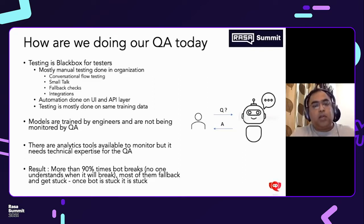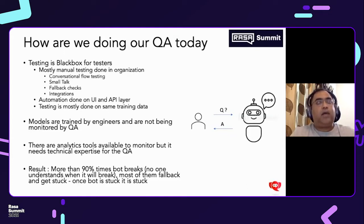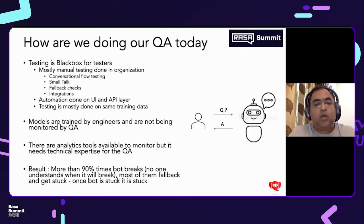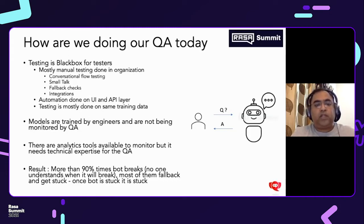There are models being trained by specific model engineers who tune the models. And as a QA, we would never get to monitor them — how they are behaving while we are conversing with the bot, and what stats are available. Most QAs do not have access to that. There are analytical tools in the market, but they're quite technical in nature, and most manual QA people don't understand the technical aspects.